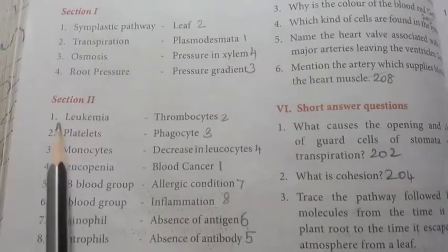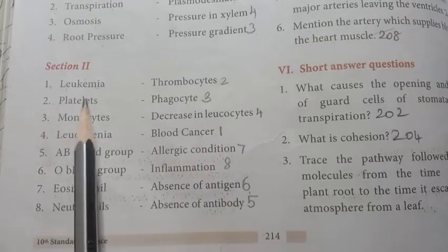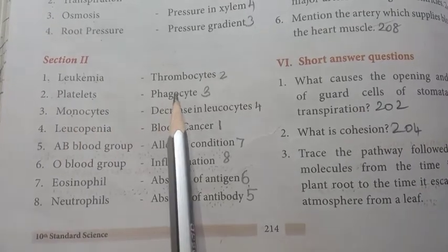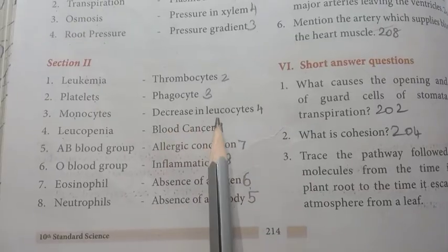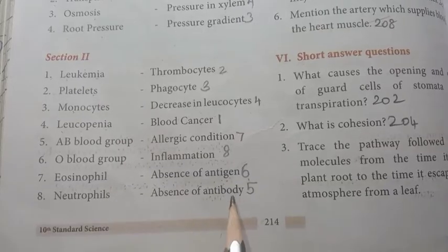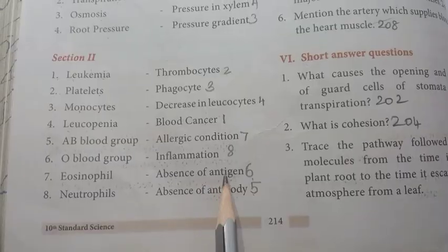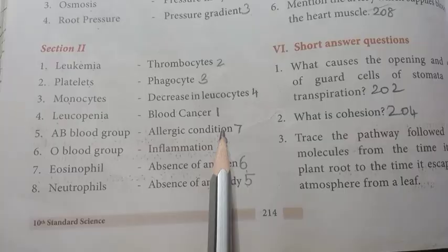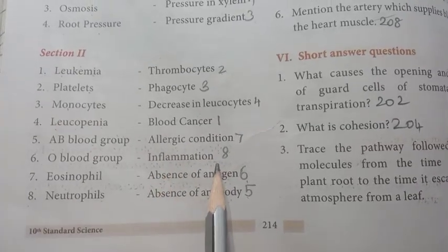Then section two: first one, leukemia - blood cancer, platelets - thrombocytes, monocytes - phagocyte, leukopenia - decrease in leukocytes, AB blood group - absence of antibody, O blood group - absence of antigen, eosinophil - allergic condition, neutrophil - inflammation.